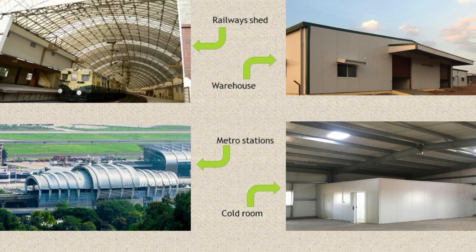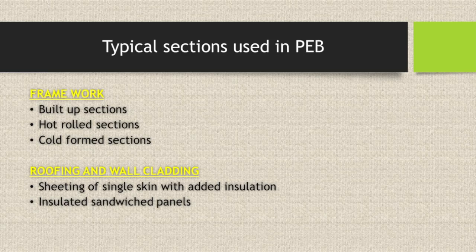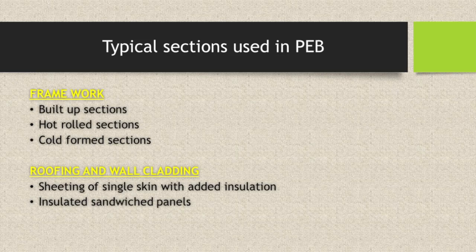When you use PEB sections, the main area is the framework, also called skeletal work. One part is roofing and wall cladding, which is the cover of materials. The framework in PEB is similar to an RCC structure — you have columns and beams — but in PEB these are built-up sections, hot-rolled sections, and cold-formed sections. For purlins, we use Z-purlins and C-purlins. For roofing and wall cladding, instead of bricks or slab, PEB uses single-skin sheeting with added insulation, or insulated sandwich panels.